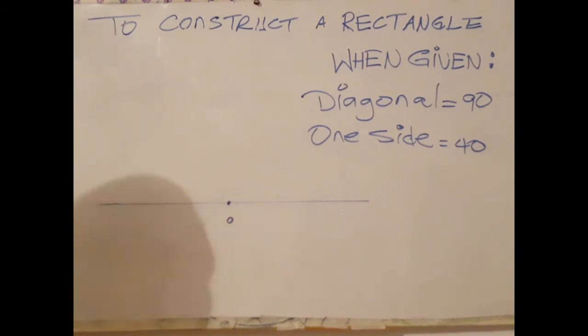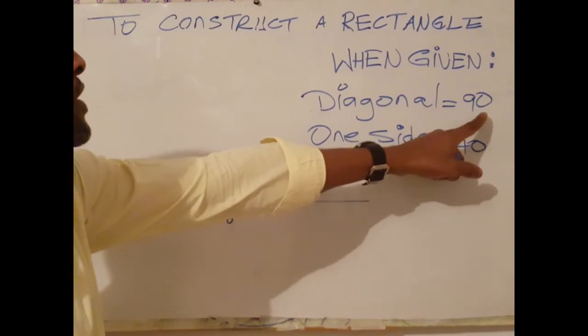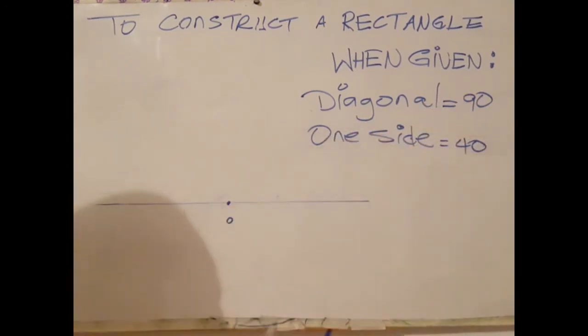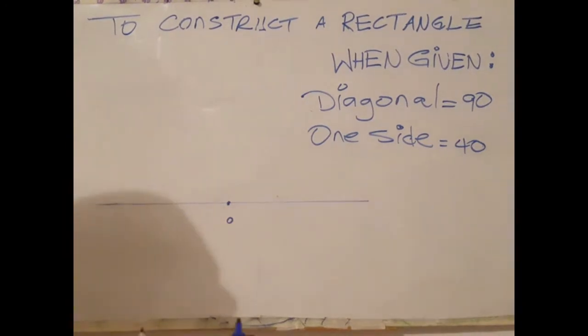Next step is to open your compass to half the length of the diagonal. In this case it is 45 millimeters, which would be the radius for a diameter of 90 millimeters.